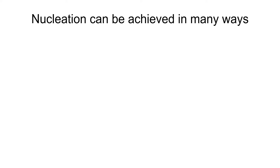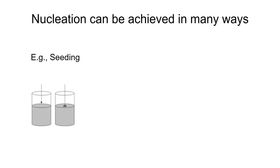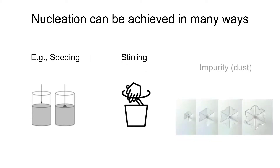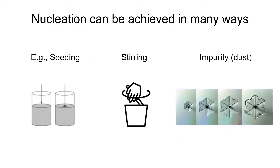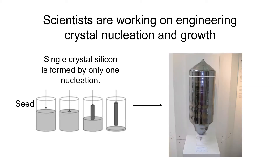In the real world, nucleation can be achieved in many ways. For example, you can use a tiny crystal as a seed to grow crystal from melt or solution, or by stirring, or by adding an impurity. Like a snowflake, the nucleation is actually triggered by dust in the air. This is the basic science about how crystals are formed through nucleation and growth.